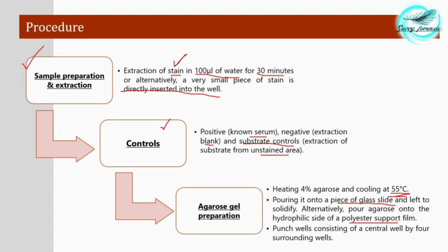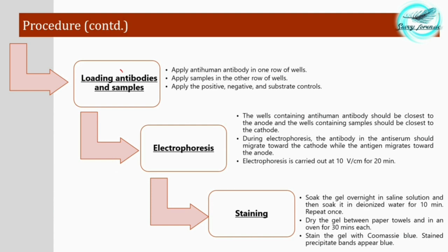Once the agarose medium is solidified, punch wells according to your needs — for example, a central well with four surrounding wells. The arrangement can be adjusted based on sample size and examination requirements. Load the anti-human antibody into one row of wells and load the samples into the opposite row. Positive, negative, and substrate controls are also applied to the wells. The wells containing anti-human antibody should be closest to the anode, while the wells containing the samples — which carry the antigen of interest — should be closest to the cathode.